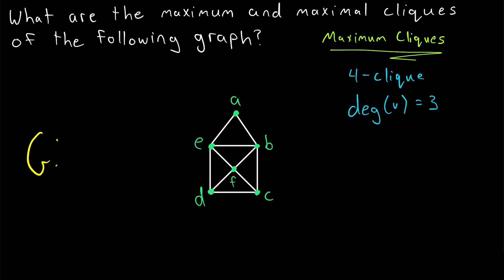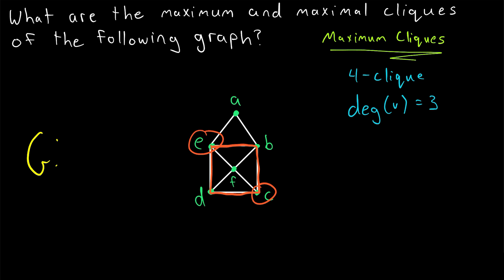Then we can start to take a closer look at these five vertices and see if there's a four-clique. There are basically two possibilities where this four-clique might be. Perhaps these four vertices on this four-cycle make up a four-clique. But we can immediately see that they do not. By definition of a clique, every pair of these four vertices would need to be adjacent. But we see that D is not adjacent to B, and C is not adjacent to E. So these four vertices E, B, C, and D cannot make up a four-clique.